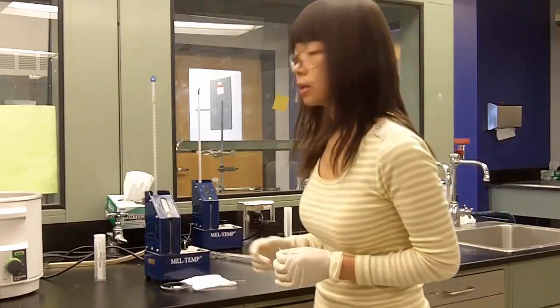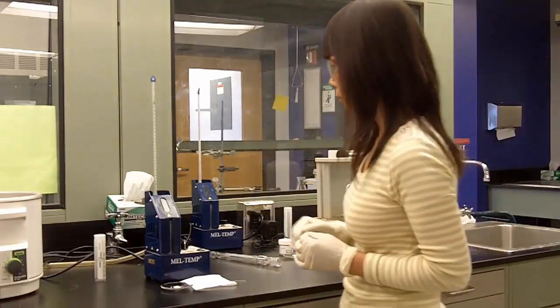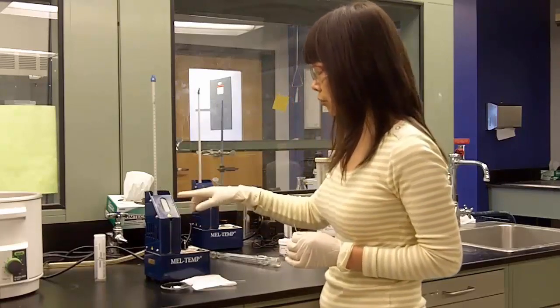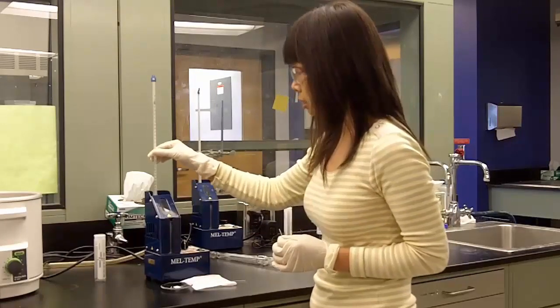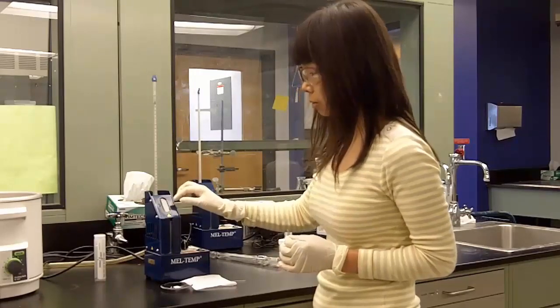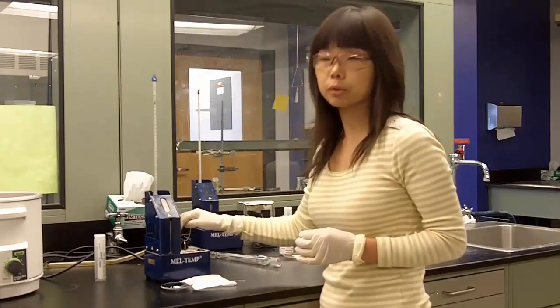Melting points are frequently used in organic chemistry to determine your compound identity and purity. The apparatus to determine a melting point is called a melt temp. It has the following major components: a thermometer to read the temperature, a magnifying glass so you can observe the status change, and a dial to control the temperature.